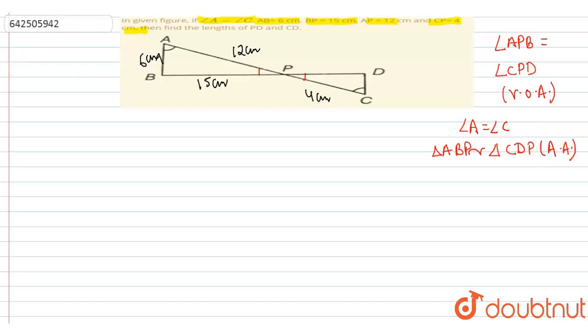So when these two triangles are similar, we can write, their corresponding sides will be in the same ratio. So we will write AB divided by CD is equal to BP divided by DP is equal to AP divided by CP.